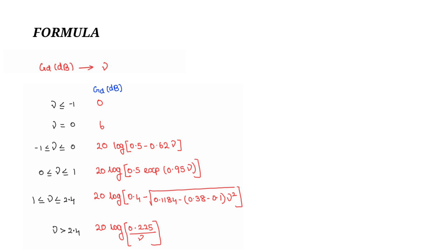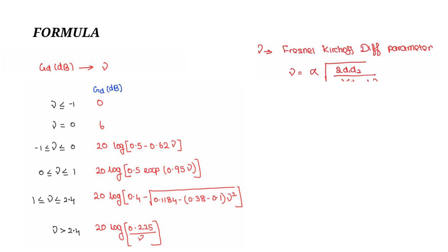For the Fresnel-Kirchhoff diffraction parameter, we have two formulas to calculate it. One is in terms of alpha, and another one is in terms of height h. When the transmitter and receiver are at equal height, use the h formula. When the transmitter and receiver are at different heights, use the alpha formula.